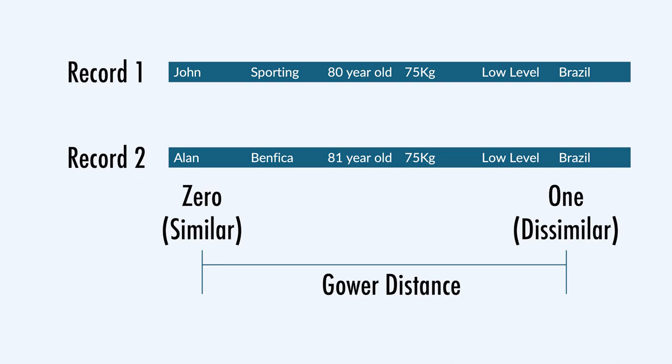The Gower distance is a really good idea, but unfortunately it does not work with k-means directly. k-means can only be used in datasets where you can compute the arithmetic mean — what is the average of blue and purple? Other clustering algorithms such as DBSCAN or hierarchical clustering techniques rely just on the distances between the points, and with those algorithms you can work with the Gower distance — but not with k-means.